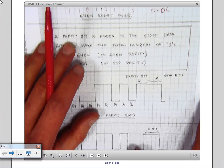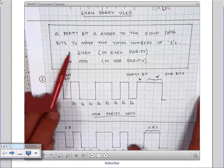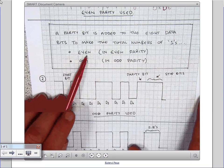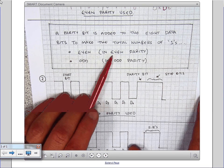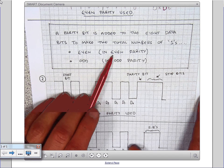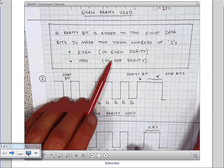So a parity bit is added to the eight data bits. If you use even parity, because there's two parity systems, then that will make the total number of ones in the byte including the parity bit even. If you use odd parity, which is a different system, then that would make the total number of ones odd.